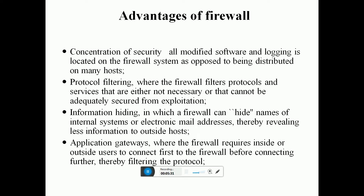Advantages of firewalls: concentration of security — all modified software logging is located at the firewall system rather than being distributed on many hosts. Protocol filtering — the firewall filters protocols and services that are either not necessary or cannot be made adequately secure. Information hiding — the firewall can hide the names of internal systems or email addresses, allowing less information to reach outside hosts. Application gateways require inside and outside users to connect first through the firewall before connecting further, filtering the protocols.